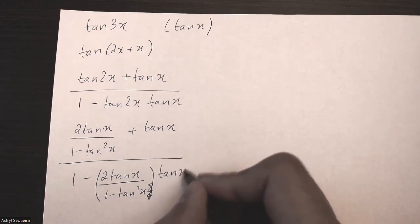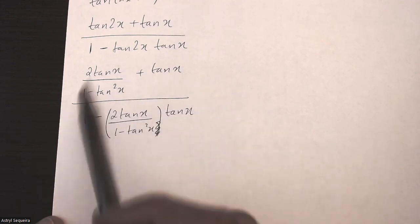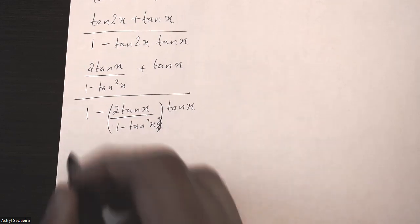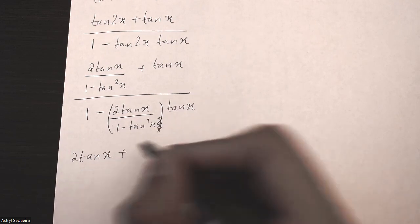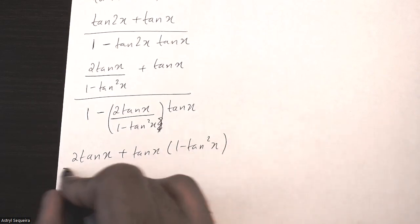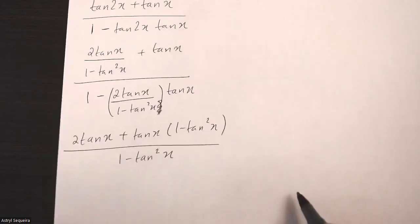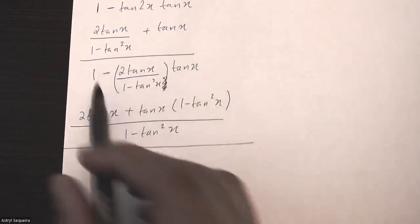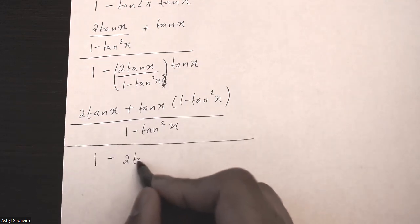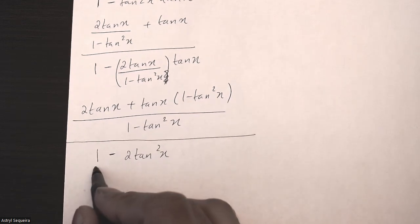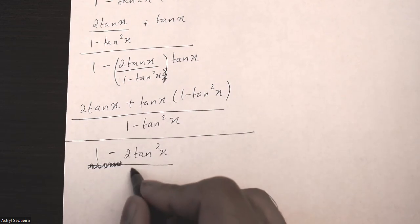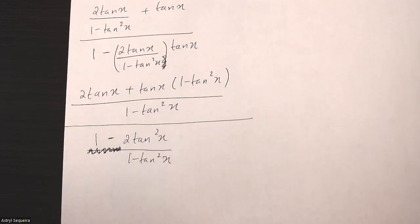This is times tan x. Now we just have to simplify this whole thing. I'm going to multiply 1 minus tan squared x on the top and bottom to create a common denominator. So I have 2 tan x plus tan x times 1 minus tan squared x, all divided by a common denominator of 1 minus tan squared x. And all of this is divided by the bottom, which I'm going to simplify by multiplying 2 tan times tan — it's going to be 1 minus 2 tan squared x, divided by 1 minus tan squared x.